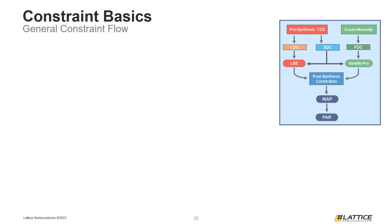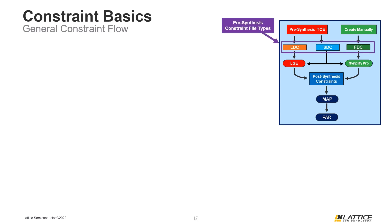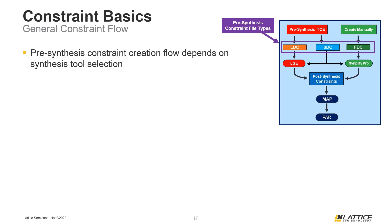The figure on the slide depicts the general constraint creation flow using Radiant. As can be seen from the example, there are three different types of pre-synthesis constraint files that can be used in Radiant projects. The main difference between these three files is the synthesis engines that they can be used with.